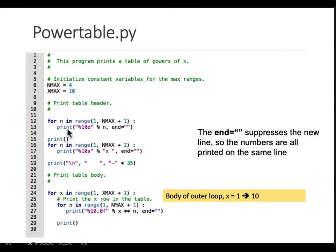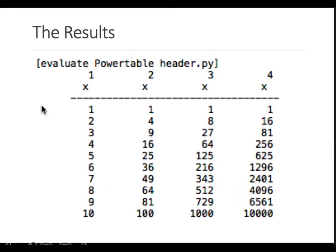If you understand this, you should be able to understand how these loops are printing. For x, any variable, in this range — the range starts with one and ends with ten plus one, which is eleven. So it runs from one to ten. Then it prints x's row in the table. We are in the first row and we need to print the columns.